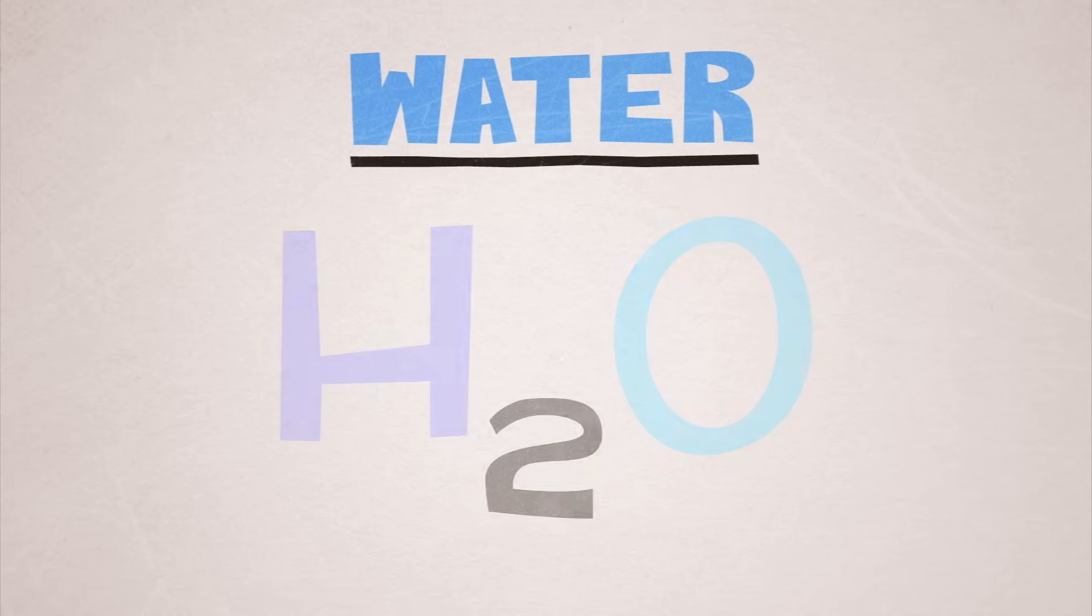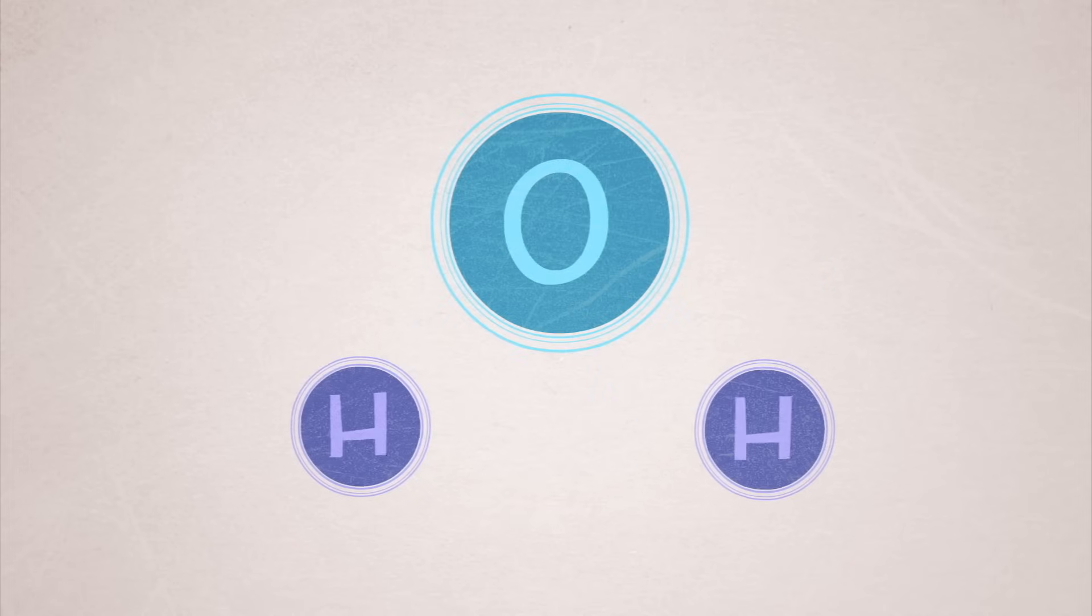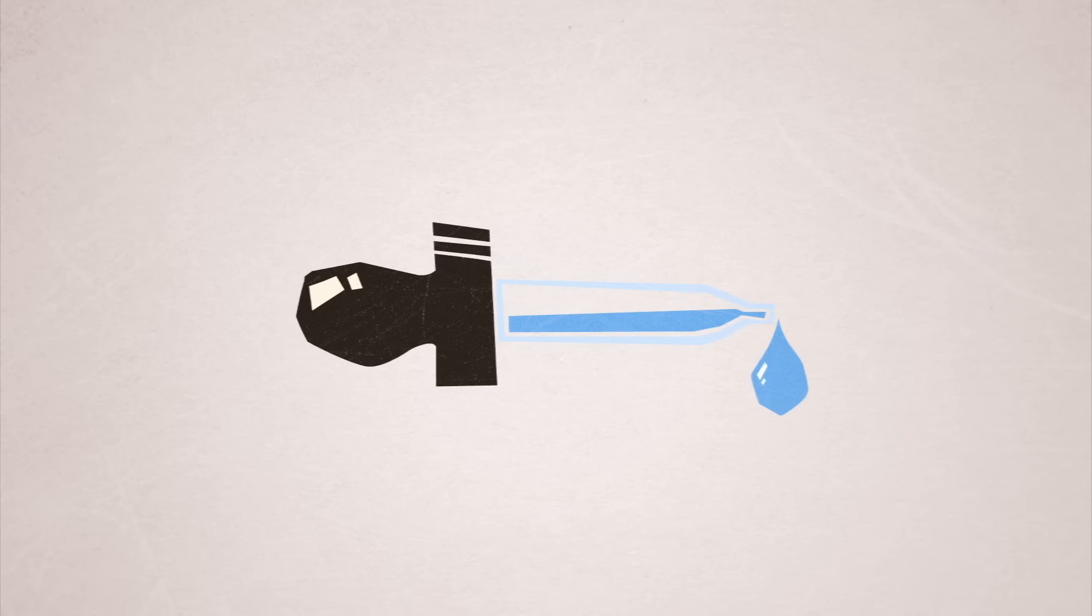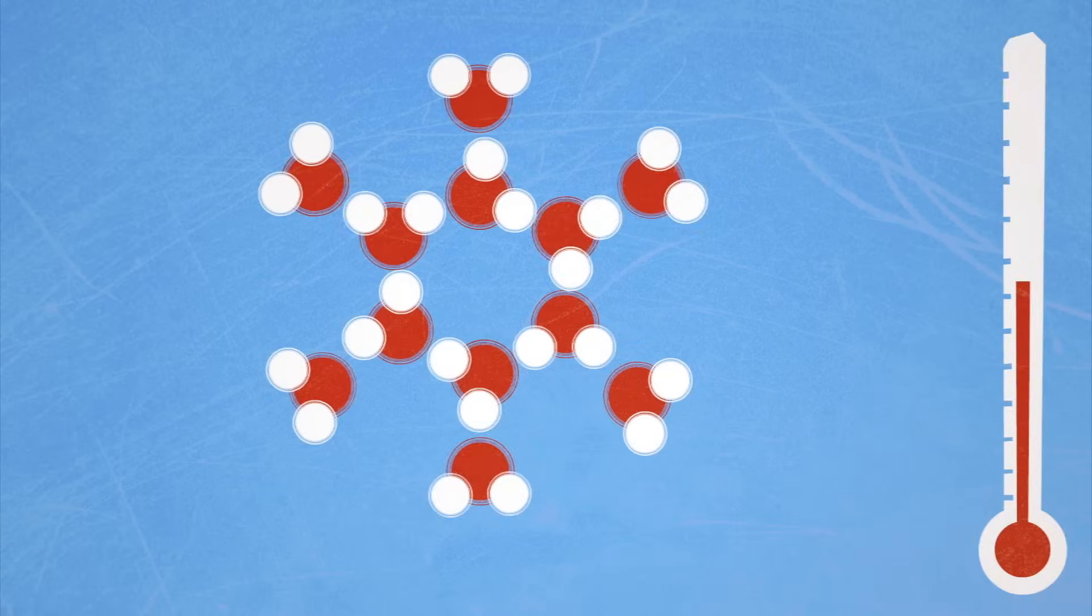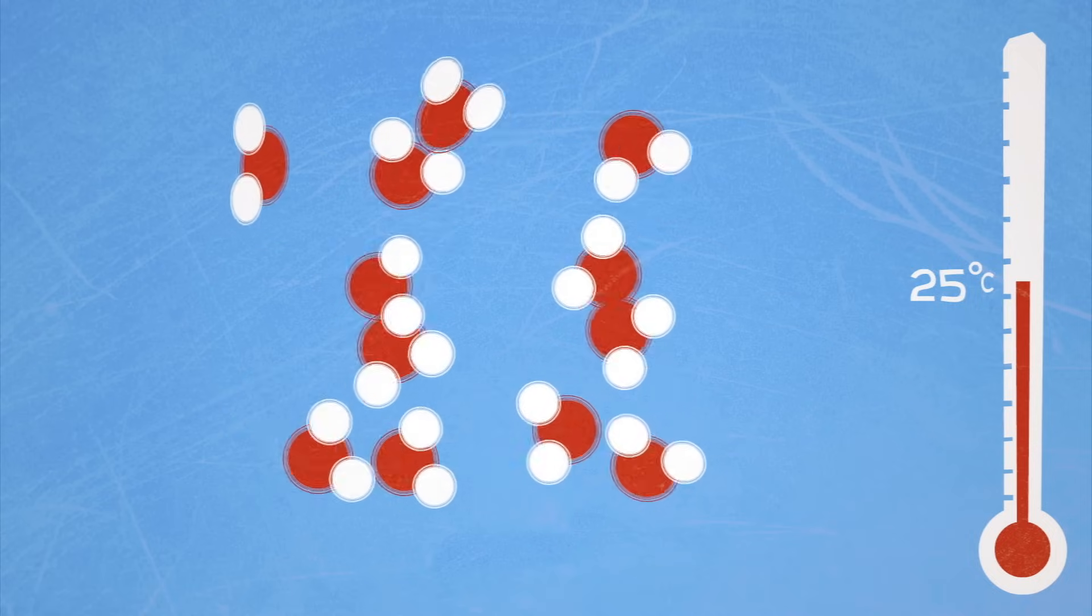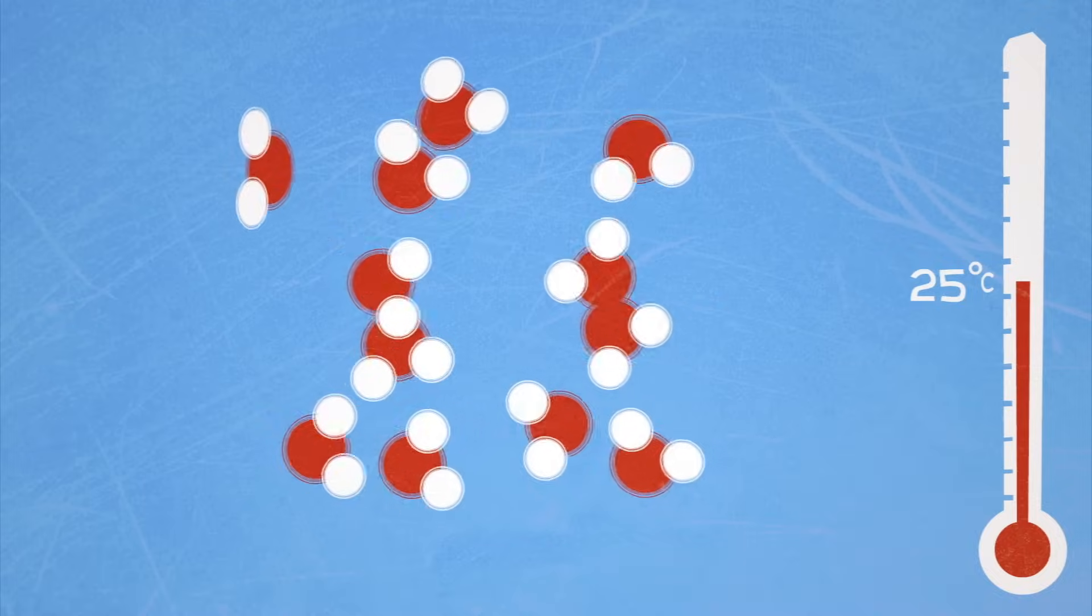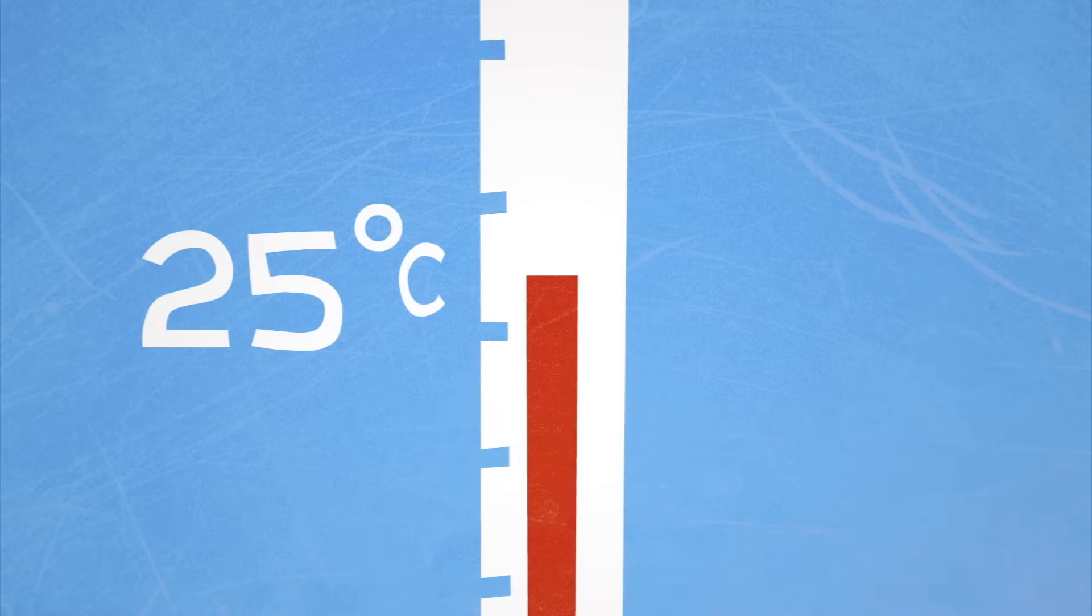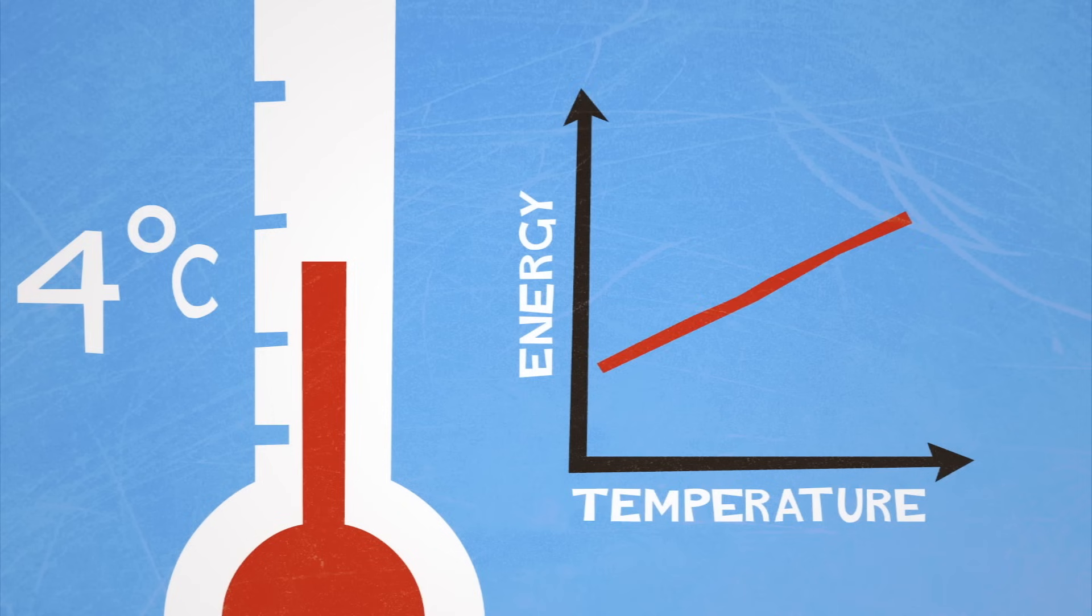You already know that every water molecule is made up of two hydrogen atoms bonded to one oxygen atom. Let's look at a few of the molecules in a drop of water, and let's say the temperature is 25 degrees Celsius. The molecules are bending, stretching, spinning, and moving through space. Now, let's lower the temperature, which will reduce the amount of kinetic energy each of these molecules has.